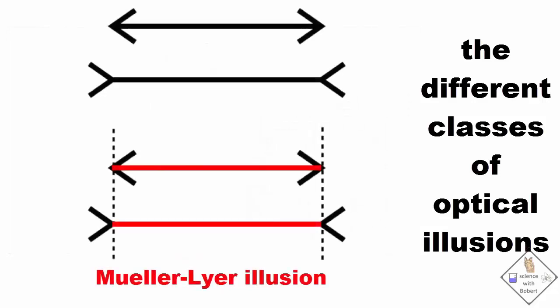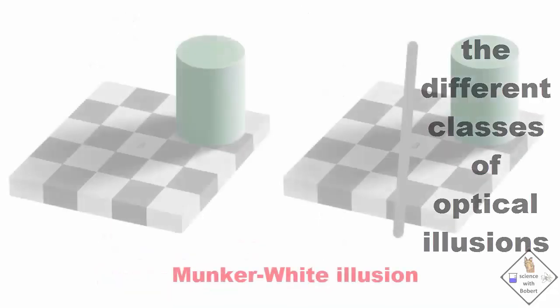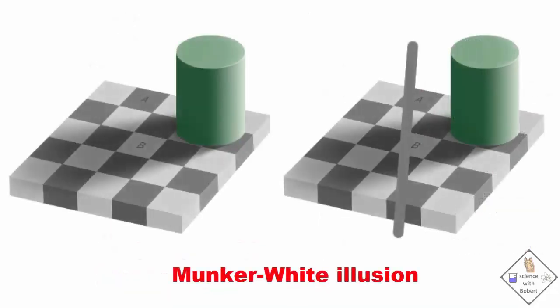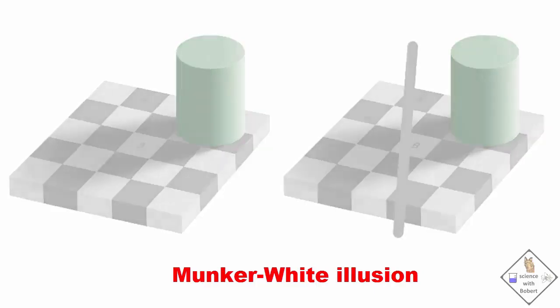A Mueller-Lyer illusion is one where inverted arrowheads make a line appear longer when it really isn't. This is a Munker white illusion. In this image, A and B are actually the same color. Can you believe it? I couldn't, so I took a piece of paper and cut a hole in it and covered up everything else and compared the two colors. They are the same.